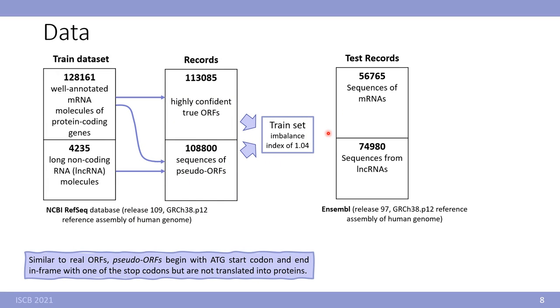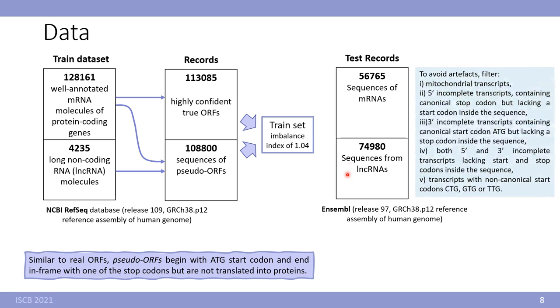For our test data we downloaded a sample dataset. We had 56,000 mRNA and 74,000 sequences from long non-coding RNA. To avoid different artifacts we filter out mitochondrial transcripts, incomplete transcripts and transcripts with non-canonical start codons.